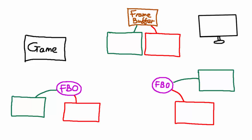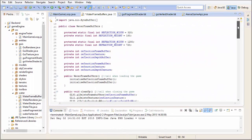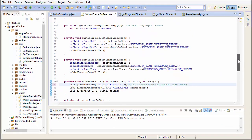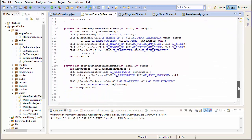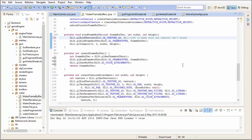Both of the colour buffer attachments are going to be textures so that we can use them to texture the water's surface. The depth buffer of the refraction texture is also going to be a texture, because it will basically be storing the depth of the water, and we'll want to sample that in the fragment shader in the future when rendering the water so that we can do some nice depth effects. For this tutorial I think it would just be easier if I give you the code for the frame buffer objects and then take you through it.